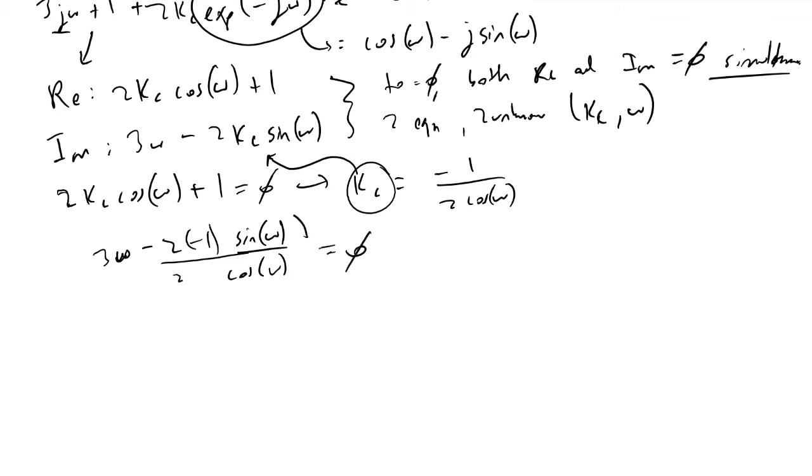Must equal zero. We'll recognize that this is equal to tangent ω, and so this equation simplifies into 3ω plus tan ω must equal zero.